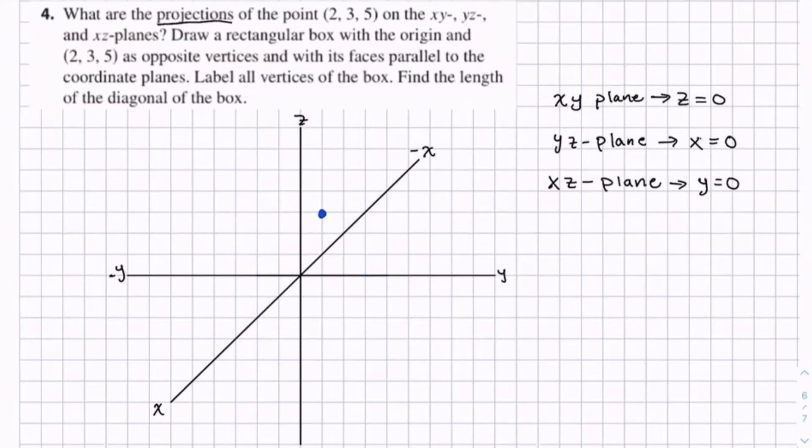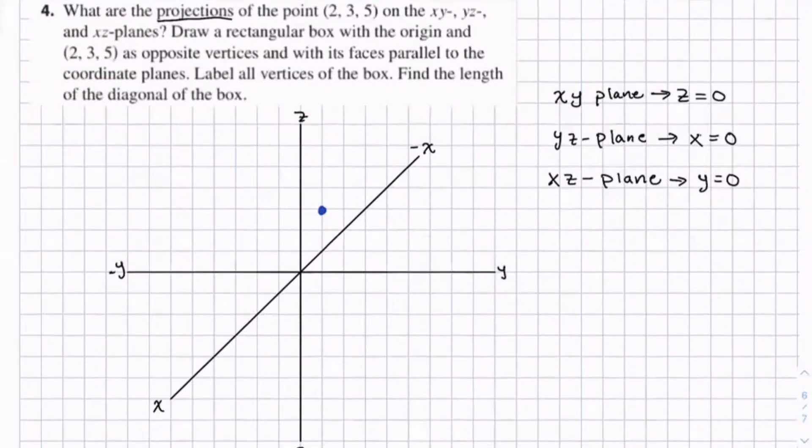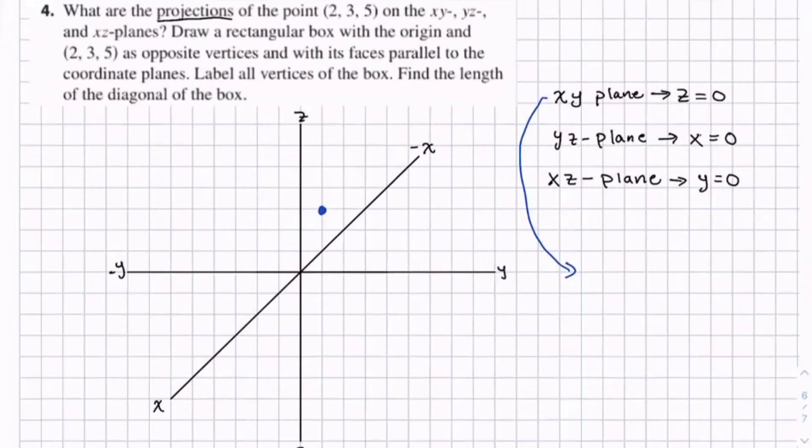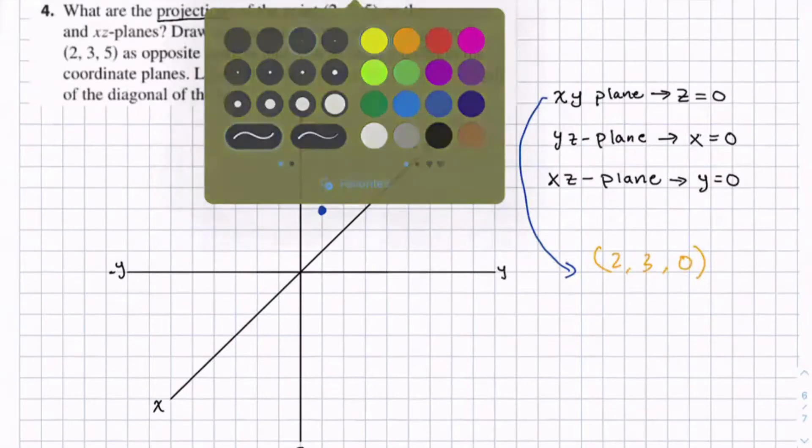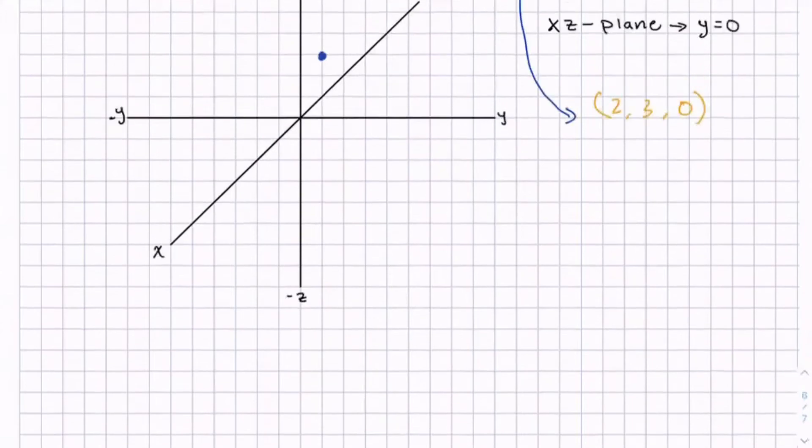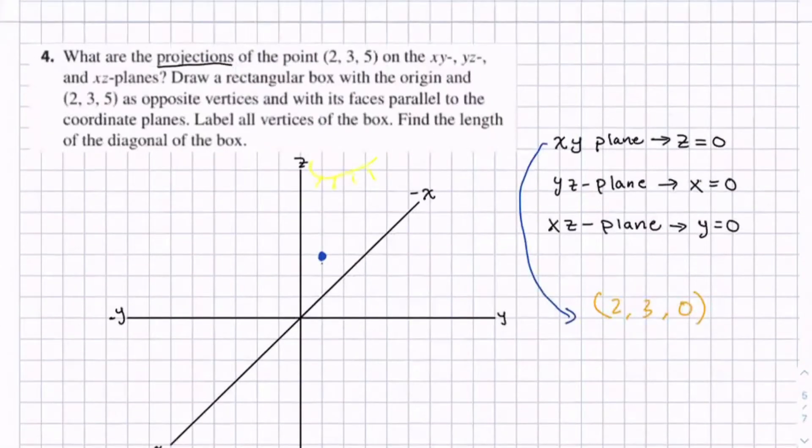So if we're finding the projection on the xy plane, that's when z equals 0. So our new point would be 2, 3, 0. And this is just like the previous example, where we had that light source up here and it creates a projection of this point down here on the xy plane.